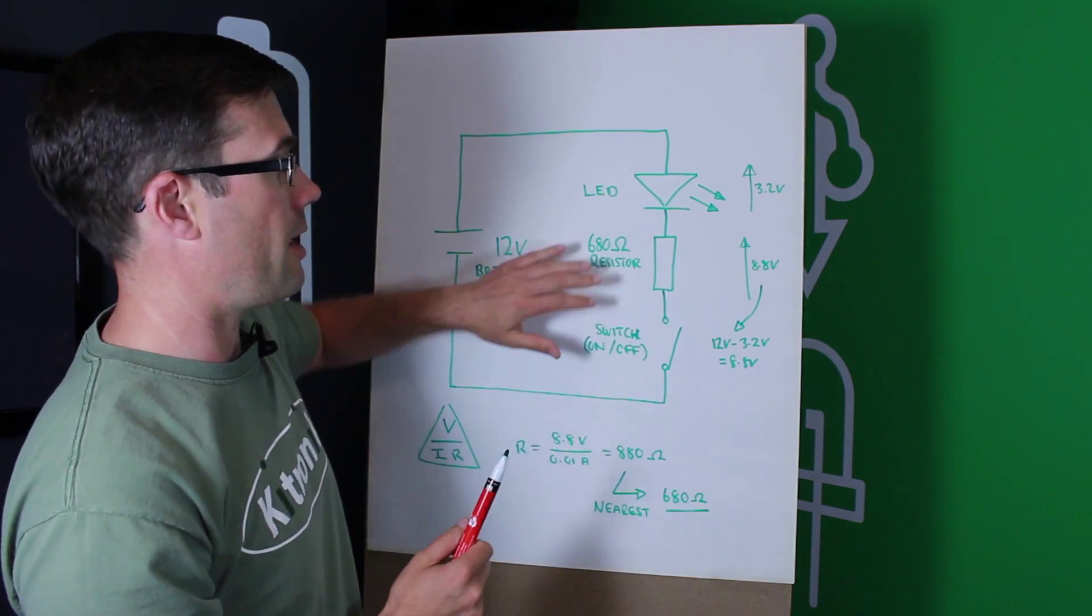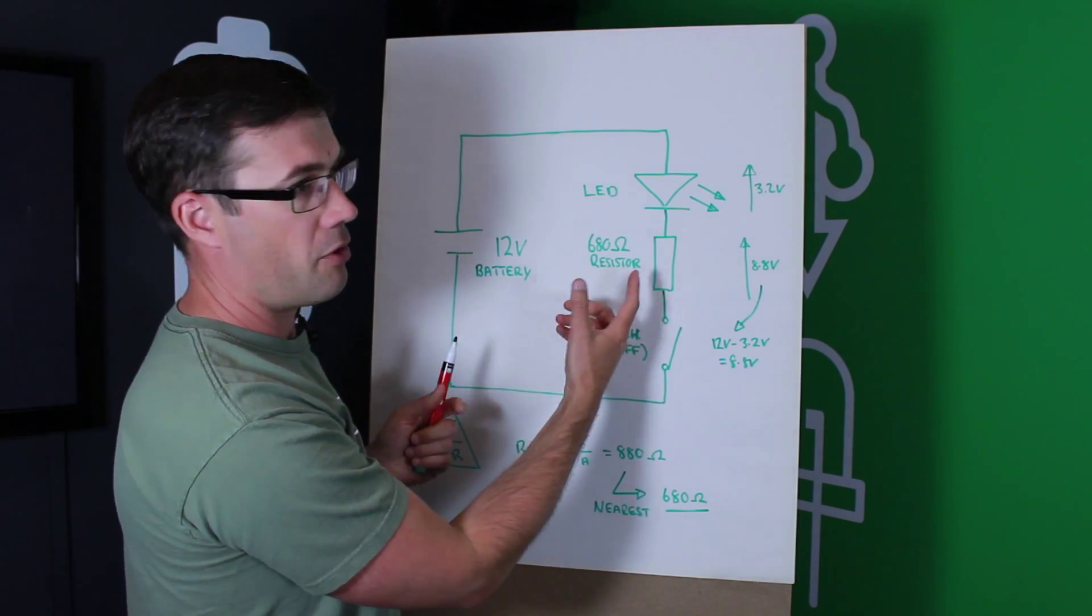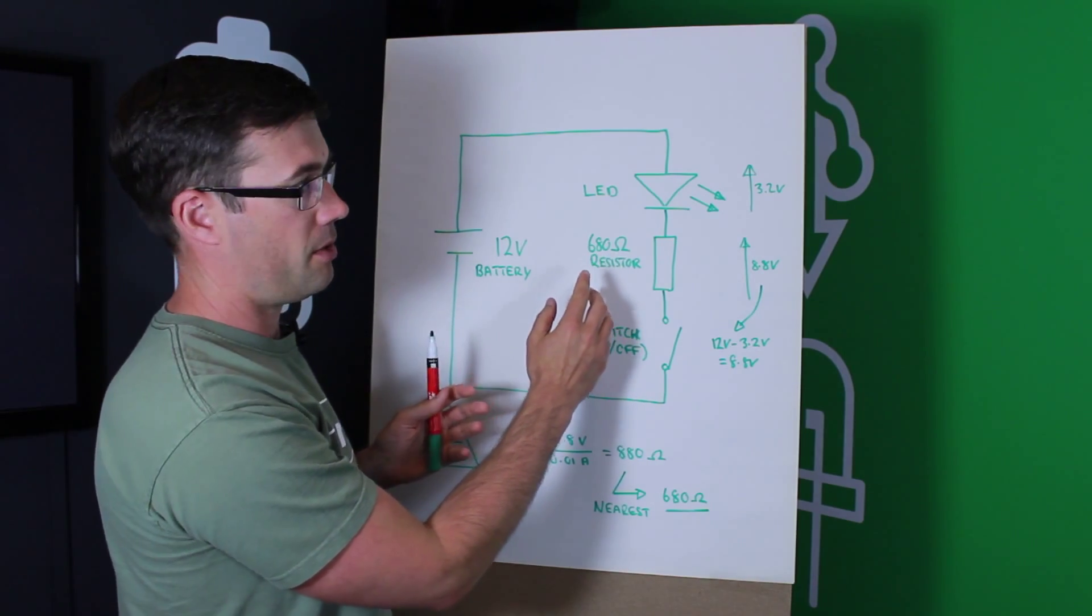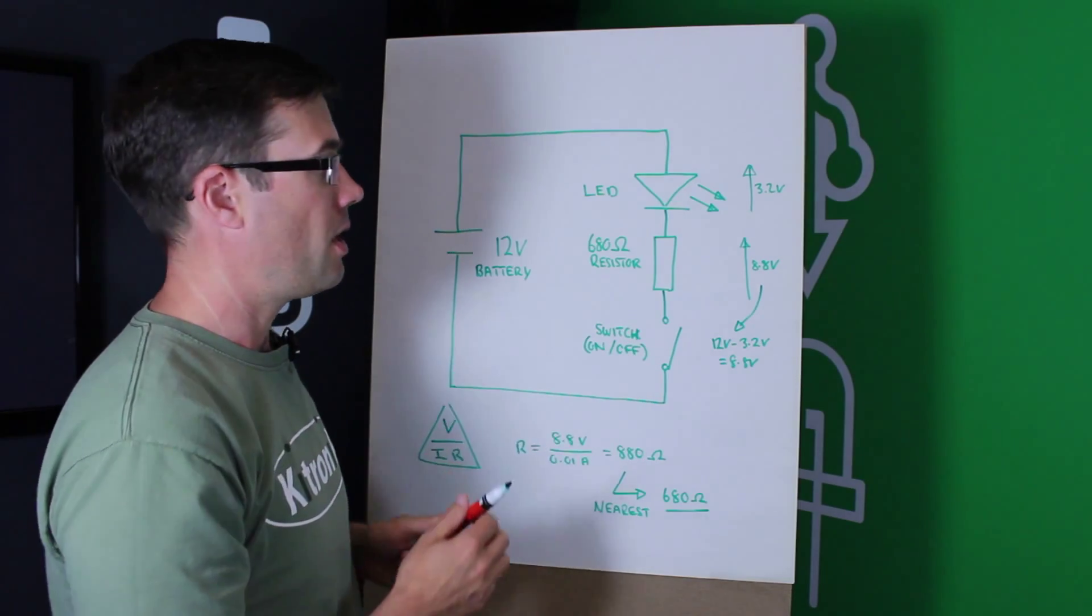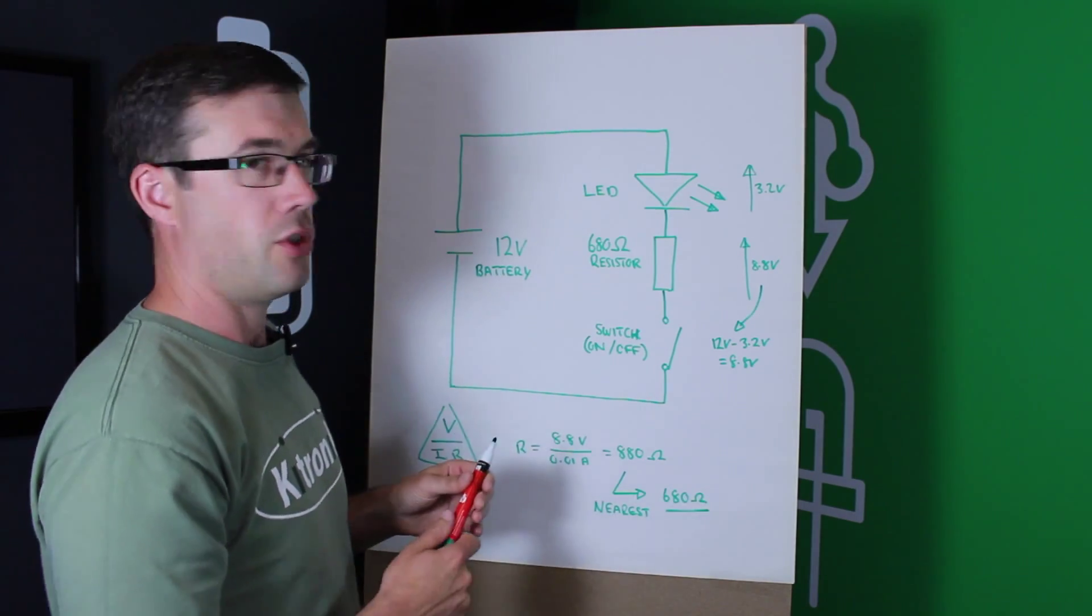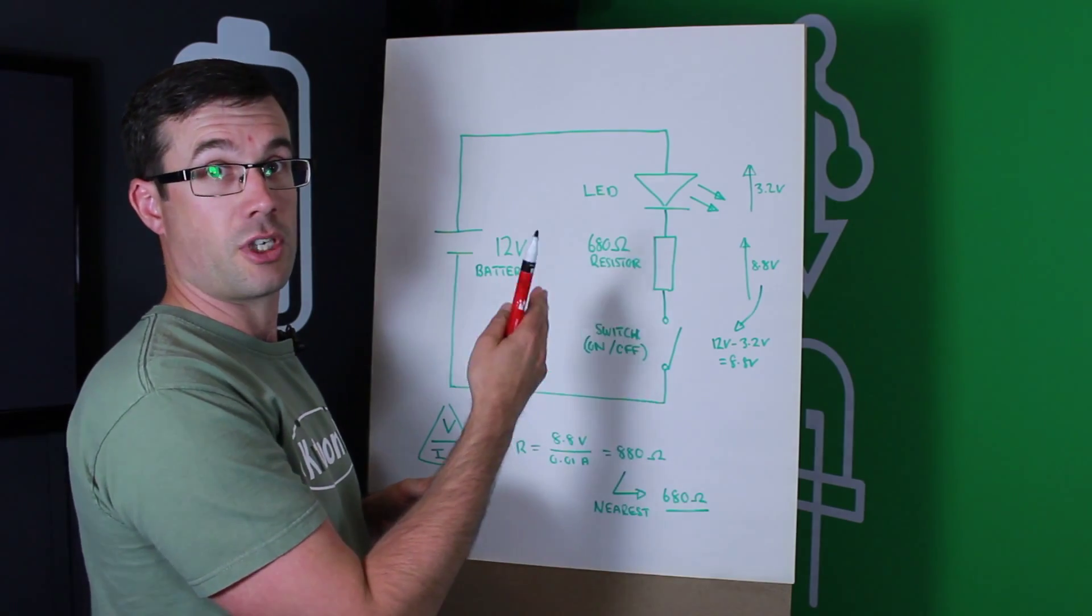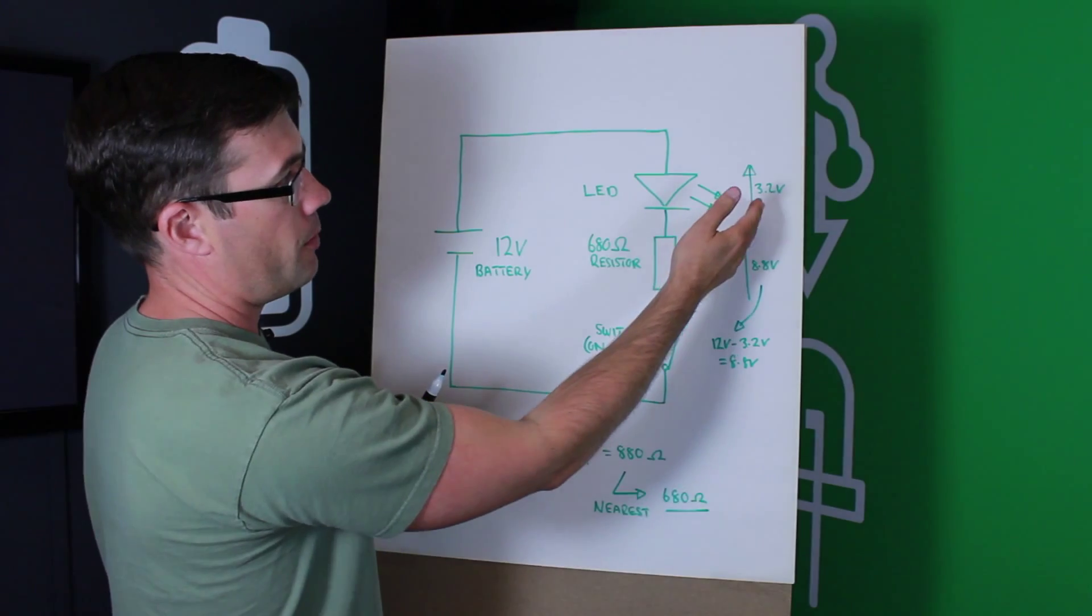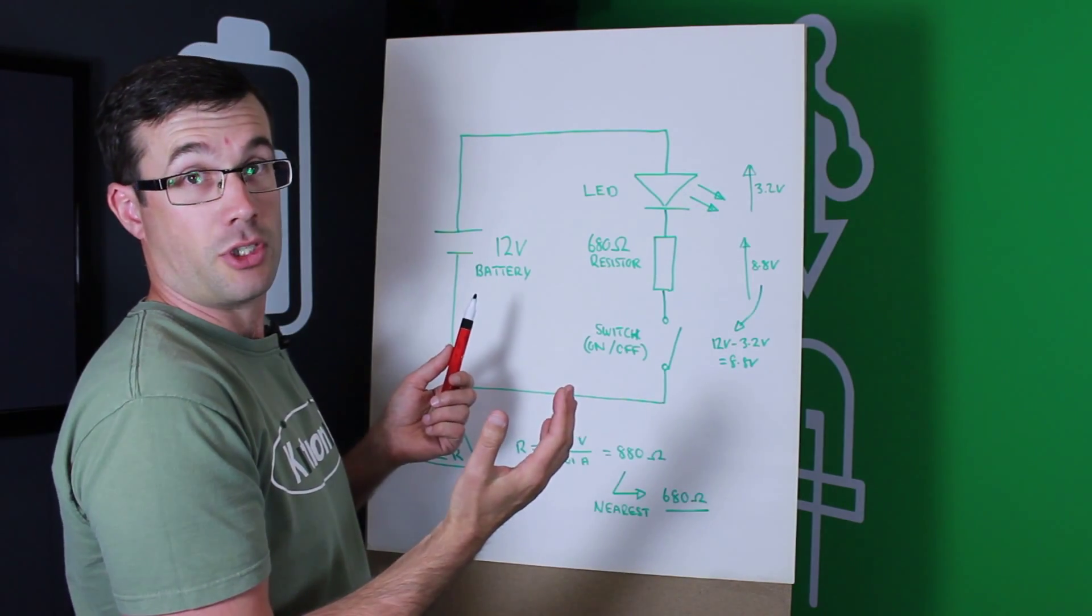So, how do we actually calculate what value this resistor should be? Now, we know from when we built the circuit that it's actually a 680 ohm resistor, but we can go through the calculations to show how we determine that. It's actually very simple. We use something called Ohm's law, which is known as voltage equals current times resistance.